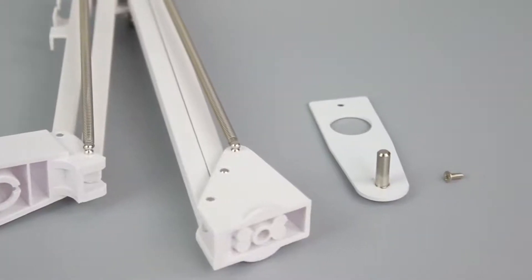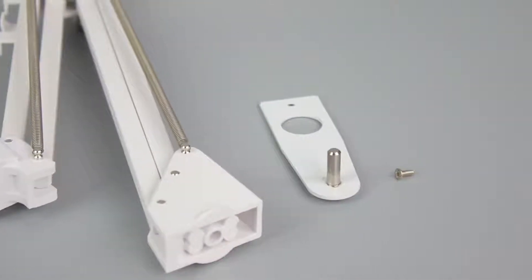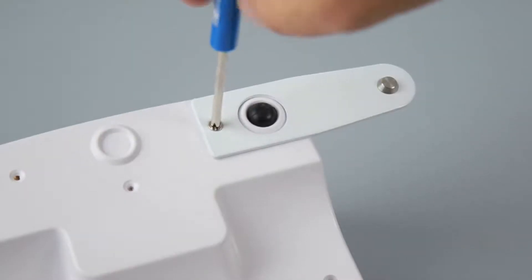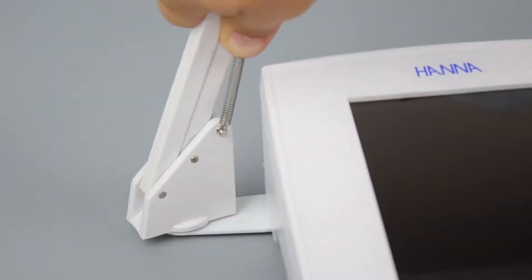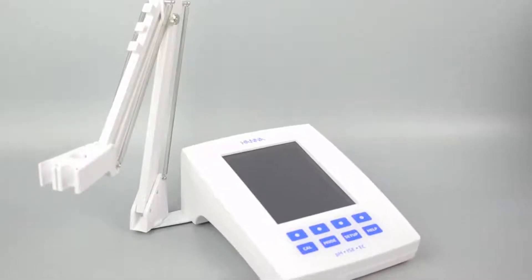Inside the box, you'll find the base plate, screws, and the electrode holder. To attach the holder, screw the base plate into the bottom of the meter and slide the arm into place. Once that is assembled, you can begin setting up your meter.